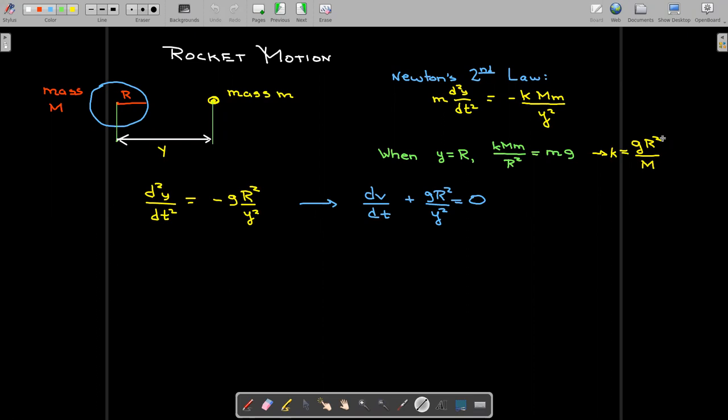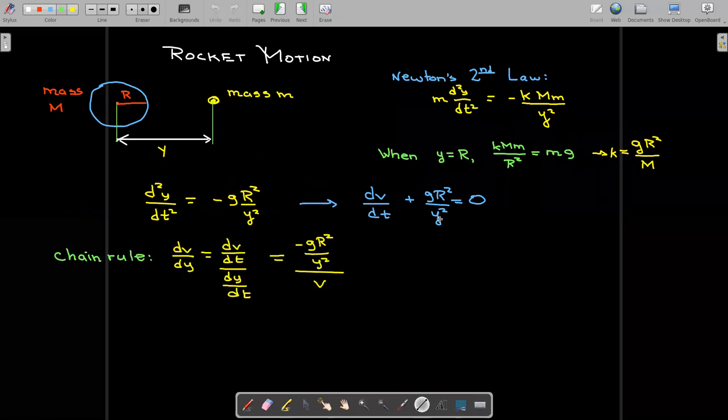So if I put that into Newton's second law and write that in standard form, you can see that this is a nonlinear differential equation because I have a rational function here, gR²/y². So to come up with a solution or at least get some information about this differential equation, I am going to now think of v as a function of y as opposed to a function of t, which means I'm going to have to use my chain rule again.